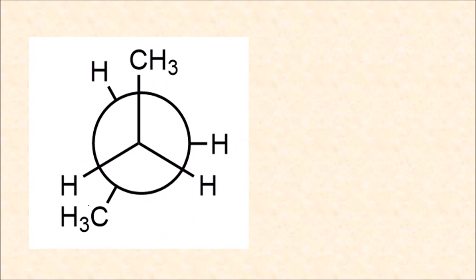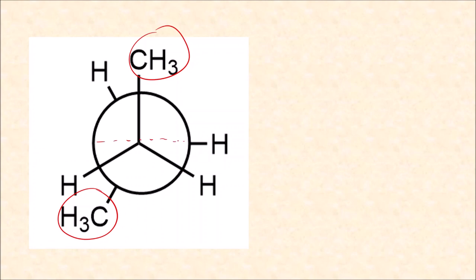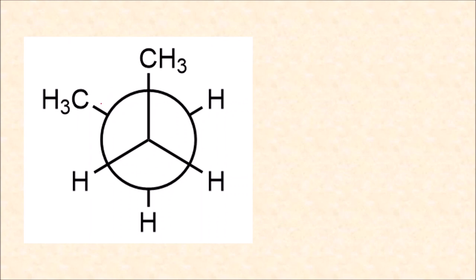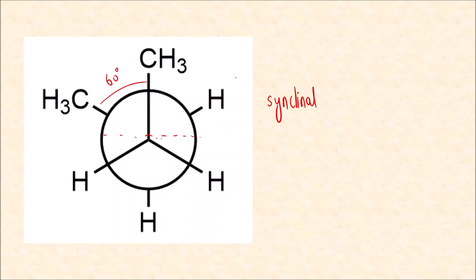In the next conformation the angle is 120°, which is in the below half of the circle, so it is anticlinal. In the last conformation the angle is 60°, which brings us back into the above half of the circle, so it is synclinal. These are the nomenclatures of the different conformations based on the Klyne-Prelog system. I hope you have understood all the terminologies as well as what a dihedral angle is. Thank you.